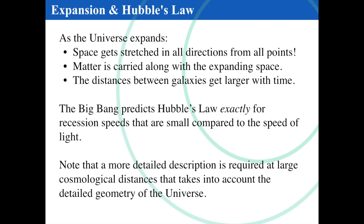As the universe expands, space gets stretched in all directions from all points. It's important because space is getting stretched in every direction as seen from all points in space — that's critical. Matter is carried along with this expanding space, and the distances between galaxies are getting physically larger with time. The Big Bang predicts Hubble's law exactly for recession speeds that are small compared to the speed of light. Hubble's law is a relationship between the speed of recession and distance, and that holds close by. The farther away you get, Hubble's law doesn't work anymore because it's no longer a linear relationship.